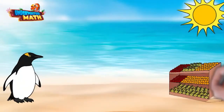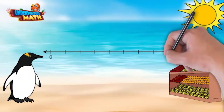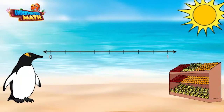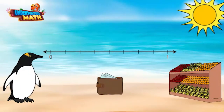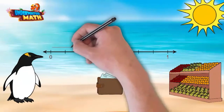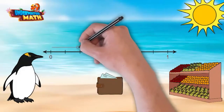Let's look at one more example. Mr. Waddles is on his way to the grocery store, which is one mile away from his house. He walked two-eighths of the way to the store when he realized he forgot his wallet. We need to represent how far he walked on this number line. There are eight equal sections between zero and one. We can show two-eighths by starting at zero and counting each tick mark by eighths. The arrow stops at the second tick mark and represents two-eighths.